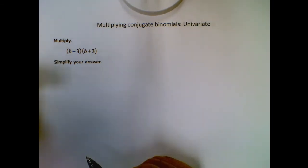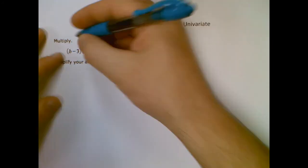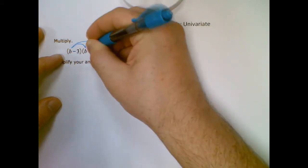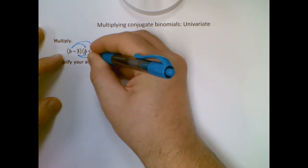So there are various formulas you can learn on how to do this quickly, but the problem doesn't take too long anyway. So I'm just going to walk you through how you would do this, even if it wasn't a conjugate. So we're multiplying binomials. So I'm going to distribute my first term to everything, and then I'm going to distribute my second term to everything.